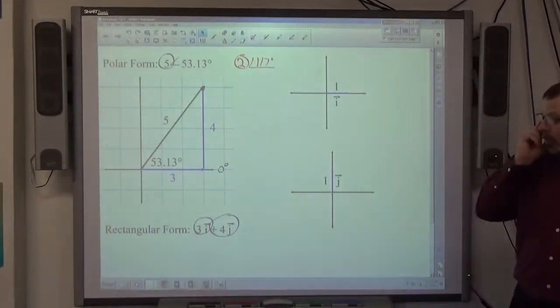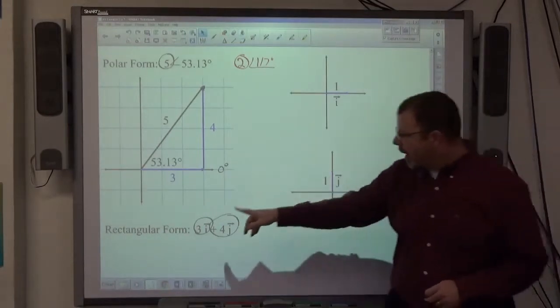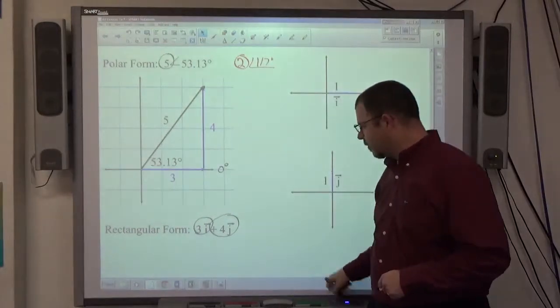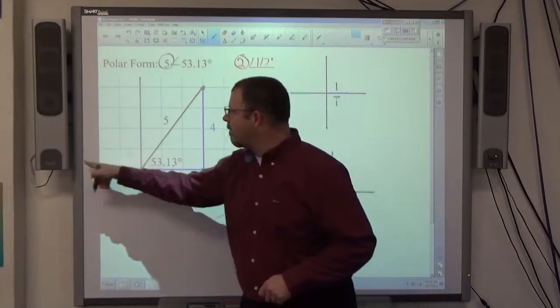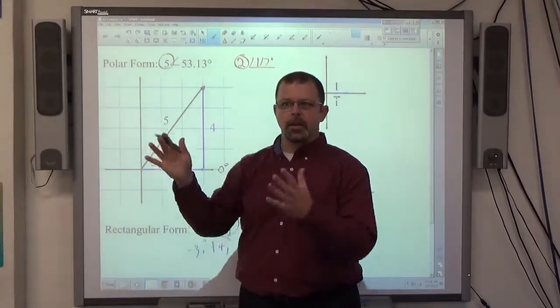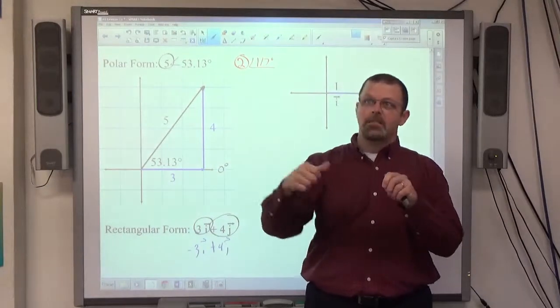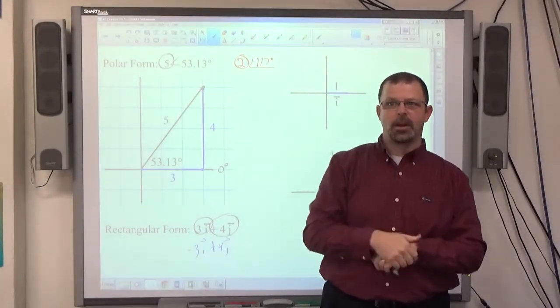All I'm doing with rectangular form is telling myself horizontally, vertically, how far I go. Positive 3, positive 4 means go right 3 up 4. If it was negative 3i plus 4j, now I'm going 3 to the left and 4 up. The signs in front of these, if I got a negative in front of i, I'm going left. I got a negative in front of j, I'm going down. Positive in front of i, right. Positive in front of j, up.